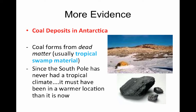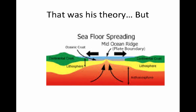Wegener also found coal in Antarctica. Coal forms from tropical plant material that has been pressurized for millions of years. Since Antarctica has never had a tropical climate at the South Pole, it had to have been located somewhere else for this coal to form. That sums up Wegener's theory of continental drift — that everything was once joined in a supercontinent called Pangaea — but it was never proven in his lifetime. A hundred years later, a scientist named Hess discovered seafloor spreading, which provided the mechanism for plate tectonic movement.